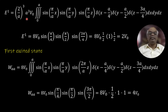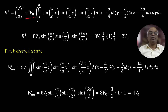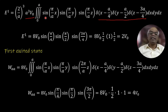Now we will find the first-order energy correction. We take the square of the normalization constant, which is (2/a)³. For the ground state, naturally nx = ny = nz = 1, so kx = π/a, ky = π/a, and kz = π/a.